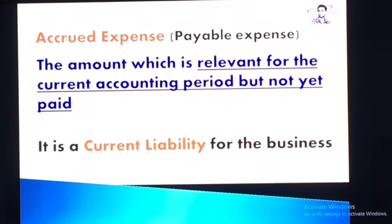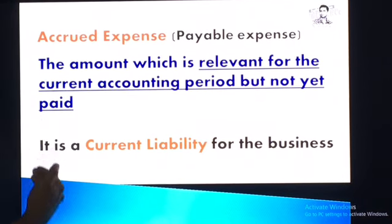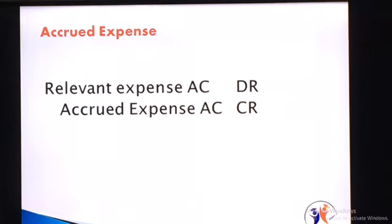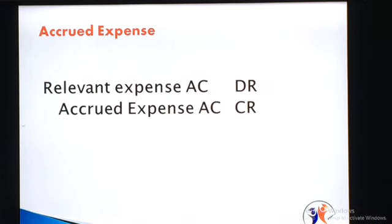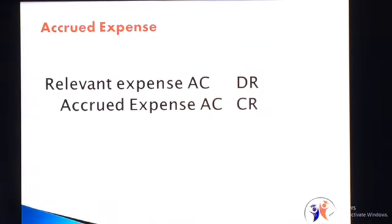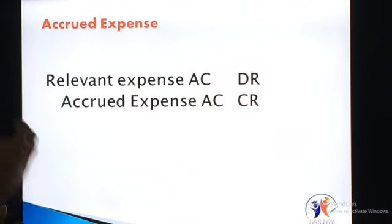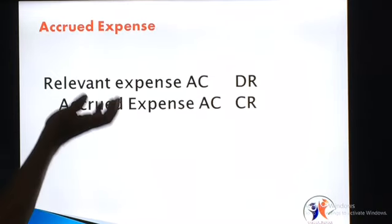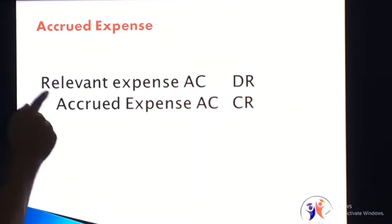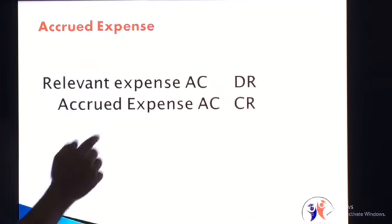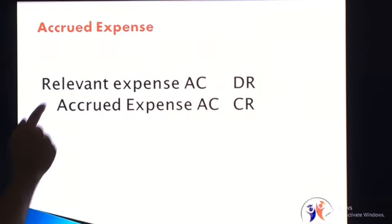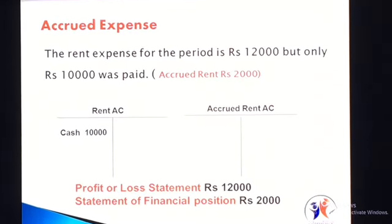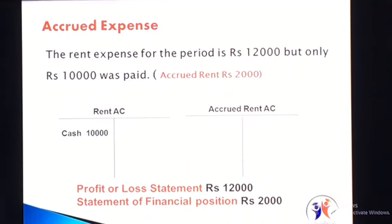The double entry for accrued expense is straightforward. The relevant expense account will be debited, and the accrued expense account will be credited. By debiting the relevant expense account, we increase the expense amount. Together with that, the accrued amount is recognized as a current liability, so it is shown on the credit side. Adjustment entries are only kept for the adjustment amount.